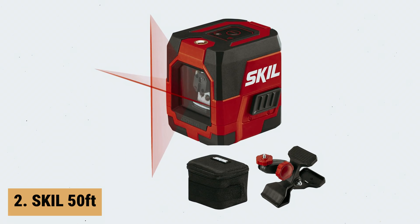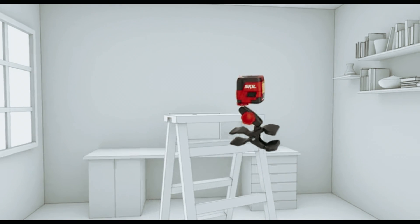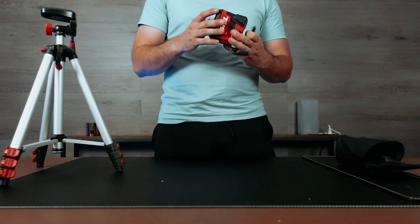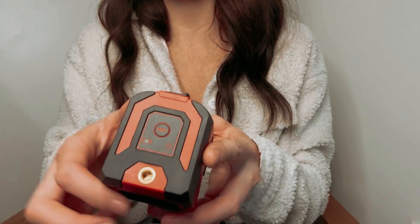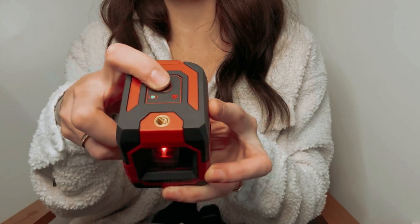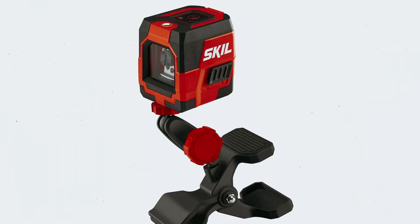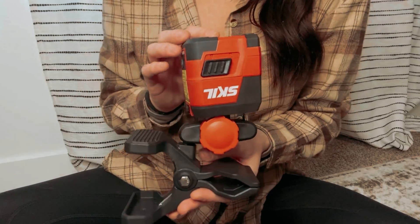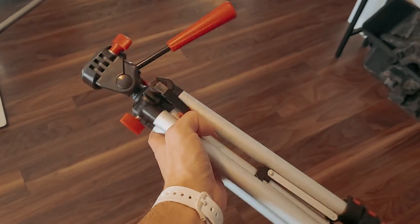At number 2 on our list is the Skill 50 Feet. The Skill 50 Feet Red Self-Leveling Crossline Laser Level is a game-changer for anyone looking to quickly and accurately align and install projects. With the ability to project bright red horizontal and vertical lines onto surfaces up to 50 feet, this laser level tool makes it easy to ensure precise measurements and alignments. One of the standout features of this laser level is its self-leveling capability, which eliminates any guesswork and ensures accurate results every time. The tool also includes convenient indicators that alert you when your lines aren't level, allowing you to make adjustments as needed.